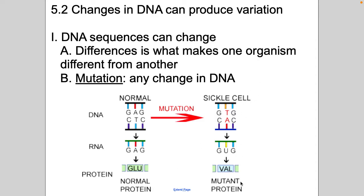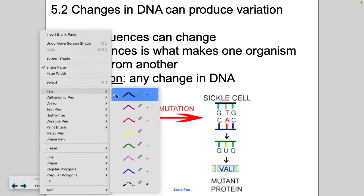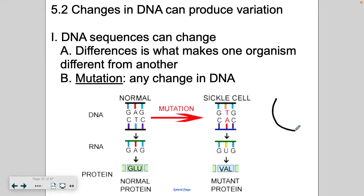But in sickle cell, now we have an amino acid of valine instead of glutamine. And as a result, your red blood cells, instead of being nice donut-shaped, carrying oxygen efficiently, now they are sickled cell. It's like a crescent moon. So over here, they're donut-shaped.